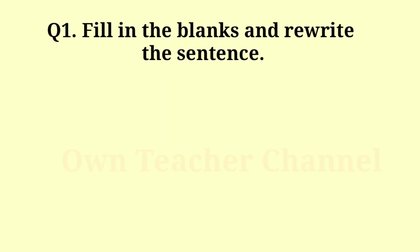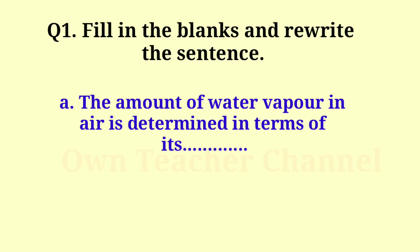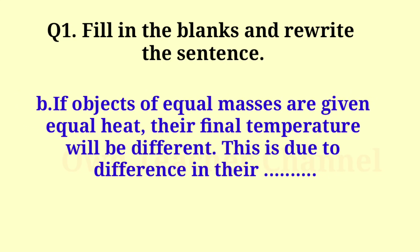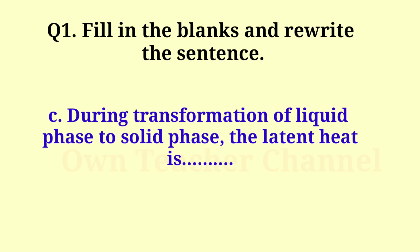Question 1: Fill in the blanks and rewrite the sentences. (a) The amount of water vapor in air is determined in terms of its absolute humidity. (b) If objects of equal masses are given equal heat, their final temperature will be different — this is due to difference in their specific heat capacities. (c) During transformation of liquid phase to solid phase, the latent heat is given off.